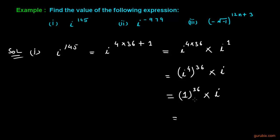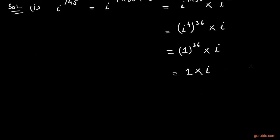So this value is equal to 1 times iota, and if we multiply iota with 1 we get iota. So the solution of the first part is iota, or we can say the square root of negative 1.